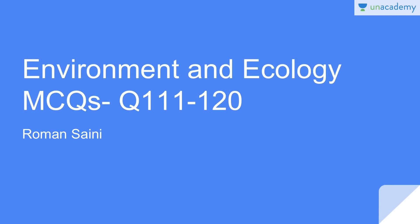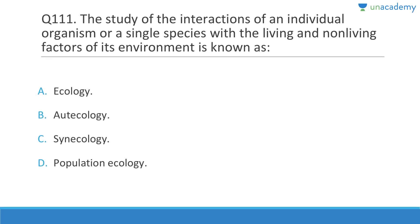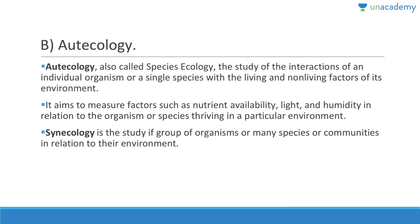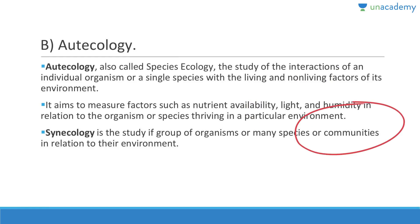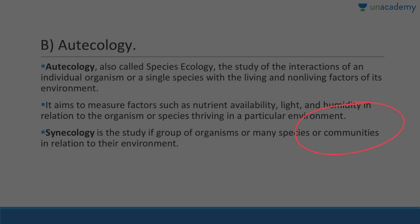The study of the interaction of an individual organism or a single species with the living and non-living factors of its environment is known as autecology. Autecology, also called species ecology, aims to measure factors such as nutrient availability, fire, light, and humidity in relation to the organism. Synecology is the study of groups of organisms or communities in relation to their environment.